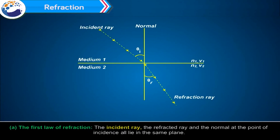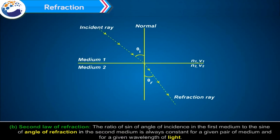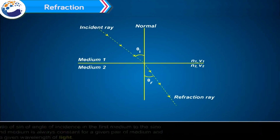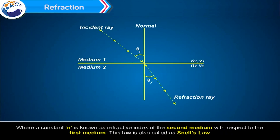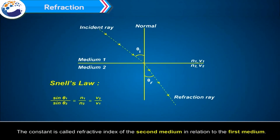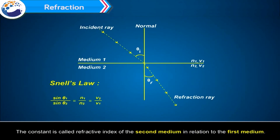Laws of refraction: The first law states that the incident ray, the refracted ray, and the normal at the point of incidence all lie in the same plane. The second law of refraction states that the ratio of the sine of the angle of incidence in the first medium to the sine of the angle of refraction in the second medium is always constant for a given pair of media and a given wavelength of light — that is, sine i divided by sine r equals a constant, known as the refractive index. This law is also called Snell's Law.